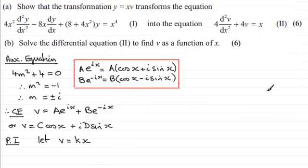If I call this a, we need to find out what d²v/dx² is going to be. So if we differentiate this with respect to x, we have dv/dx, and this will equal simply k.